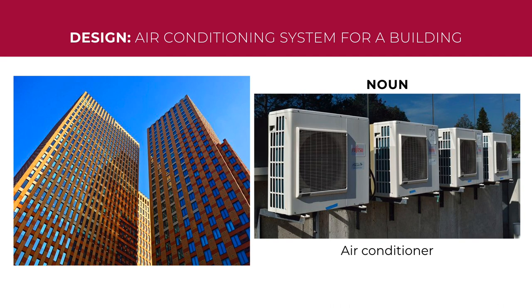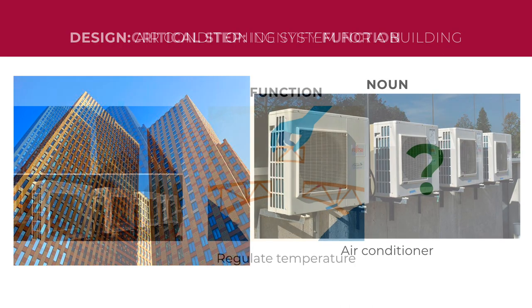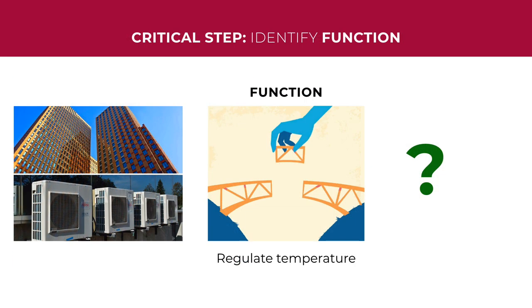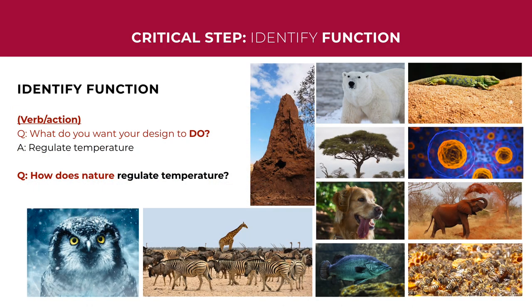Imagine you were given the task of creating a biomimetic air conditioning system for a building. If you asked, are there any air conditioners in nature, it would be difficult to find one, because air conditioner is a noun. So instead, you ask what does the air conditioner do — you find its function. It regulates temperature. Then you can ask, is there anything in nature that regulates temperature? And you would find literally thousands of examples of how nature regulates temperature.